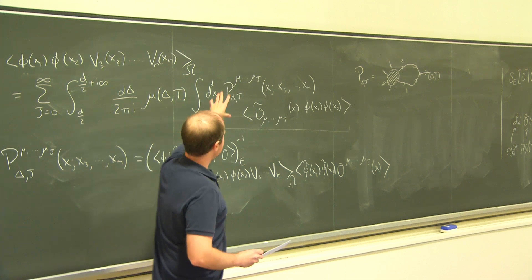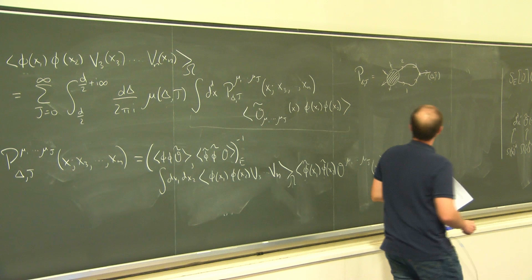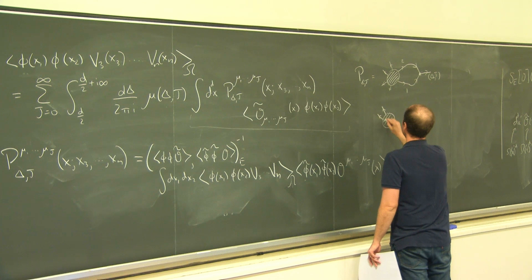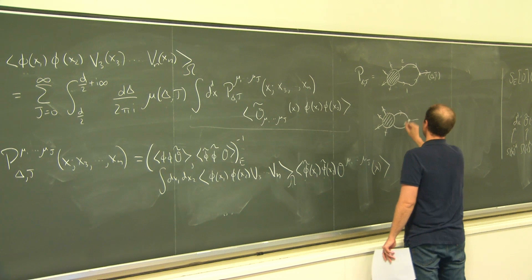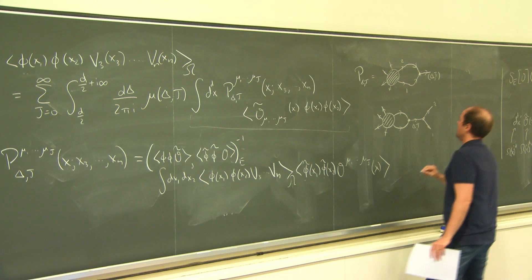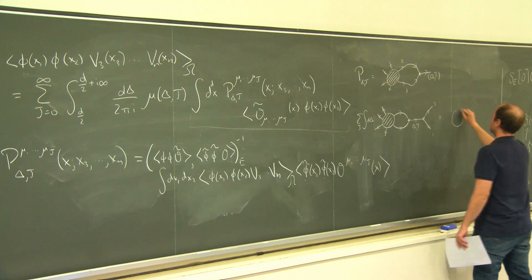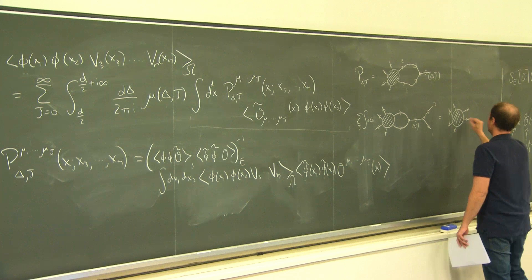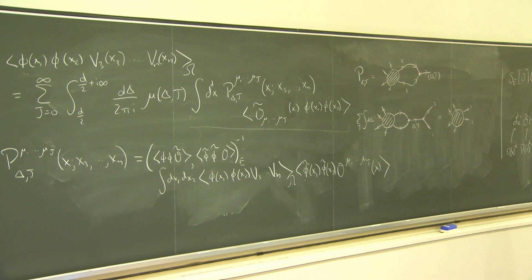The statement of these two equations is that if we compute the partial wave by contracting two lines with a three-point structure, and then take this and contract with another three-point structure and sum over J and integrate over delta, then this thing is equal to the endpoint structure we started with. So this top equation is the graphical representation of that one, and the other equation is a graphical representation of the second formula.